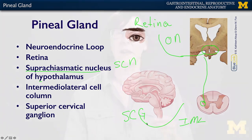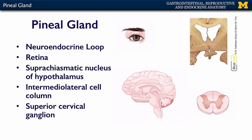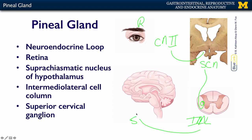As you recall from autonomics, the superior cervical ganglion is the sympathetic outflow for the entire head and neck. The superior cervical ganglion then innervates the pineal gland and stimulates it to secrete melatonin. So to draw this all one more time: we go from the retina through the optic nerve, to the suprachiasmatic nucleus, from the SCN to the intermediolateral cell column, to the superior cervical ganglion, and then up to the pineal gland.